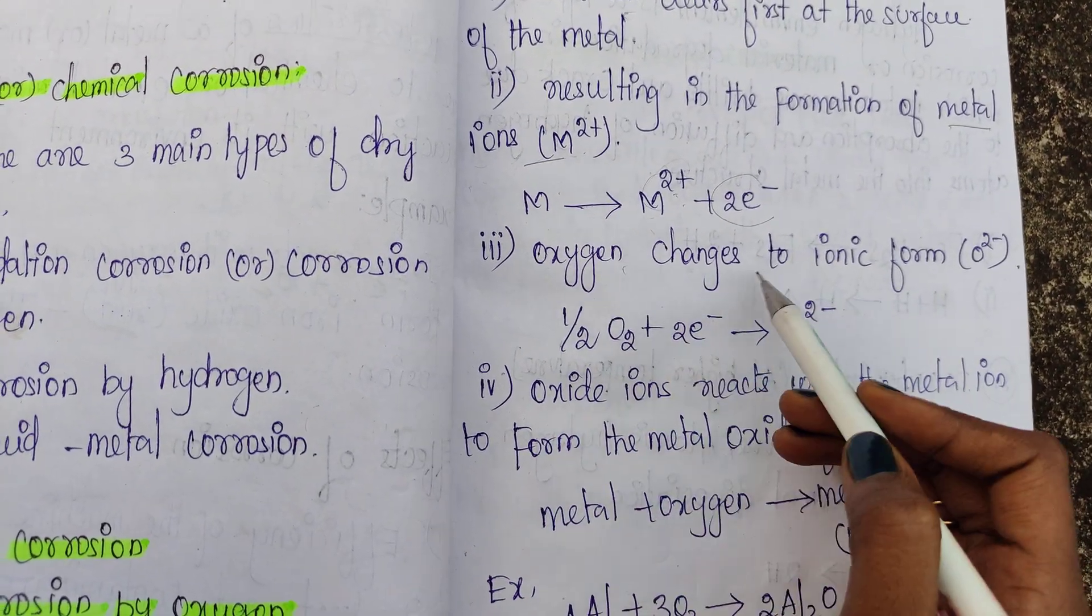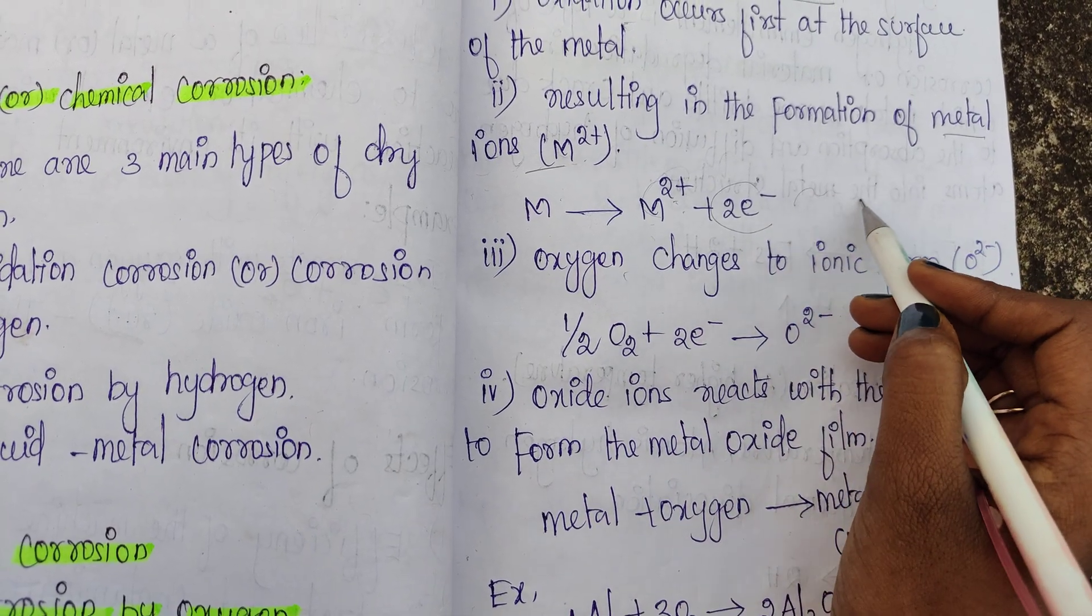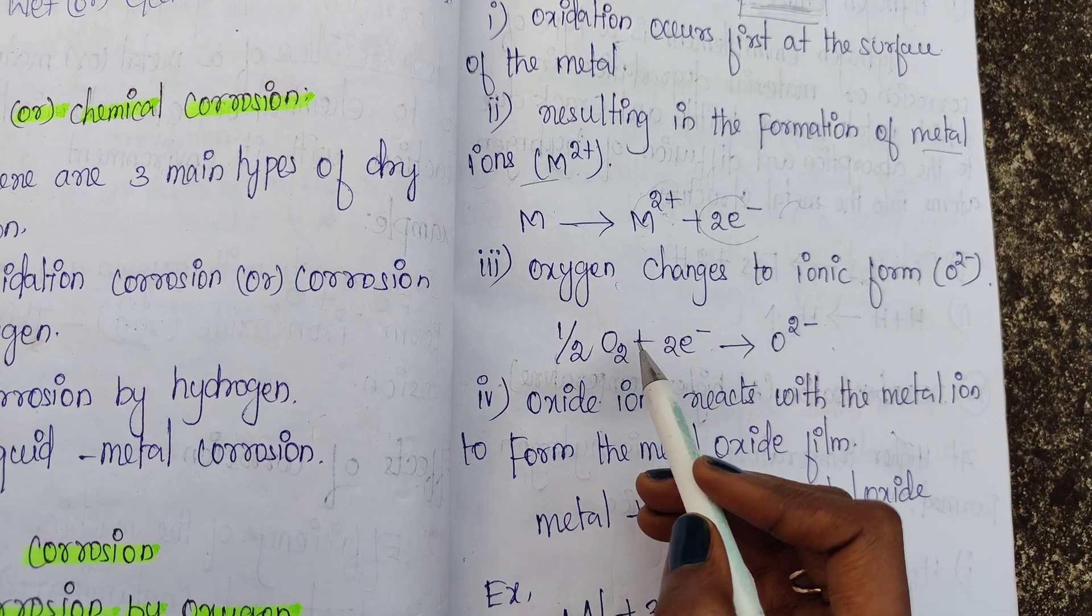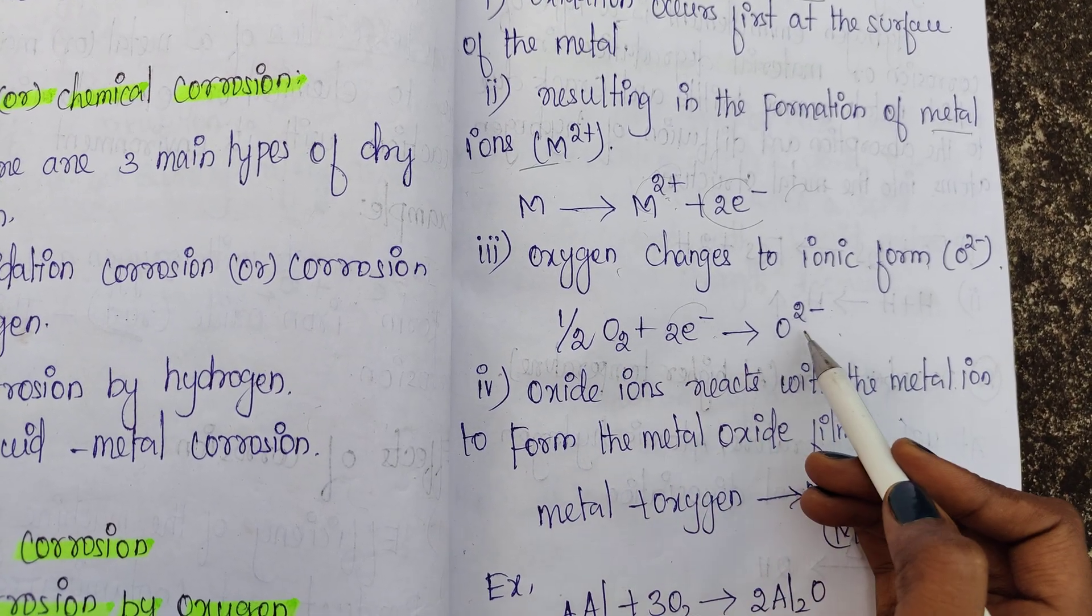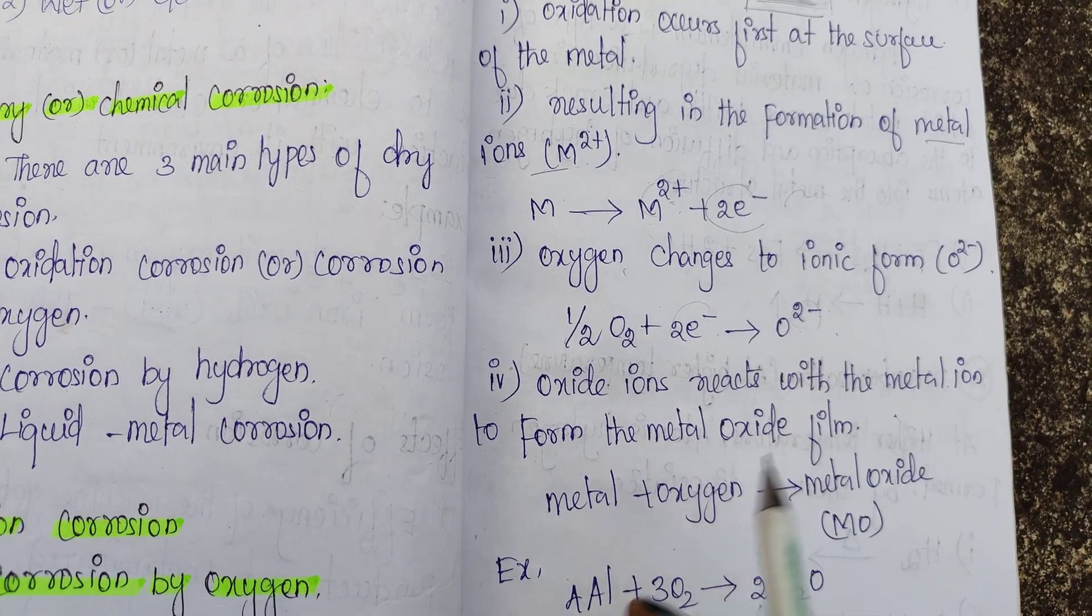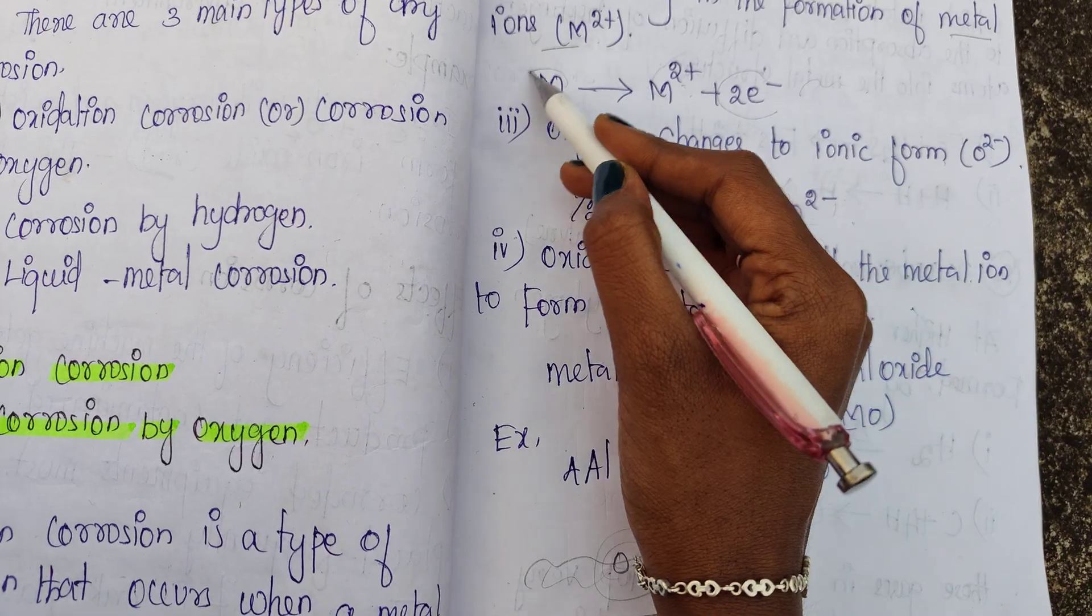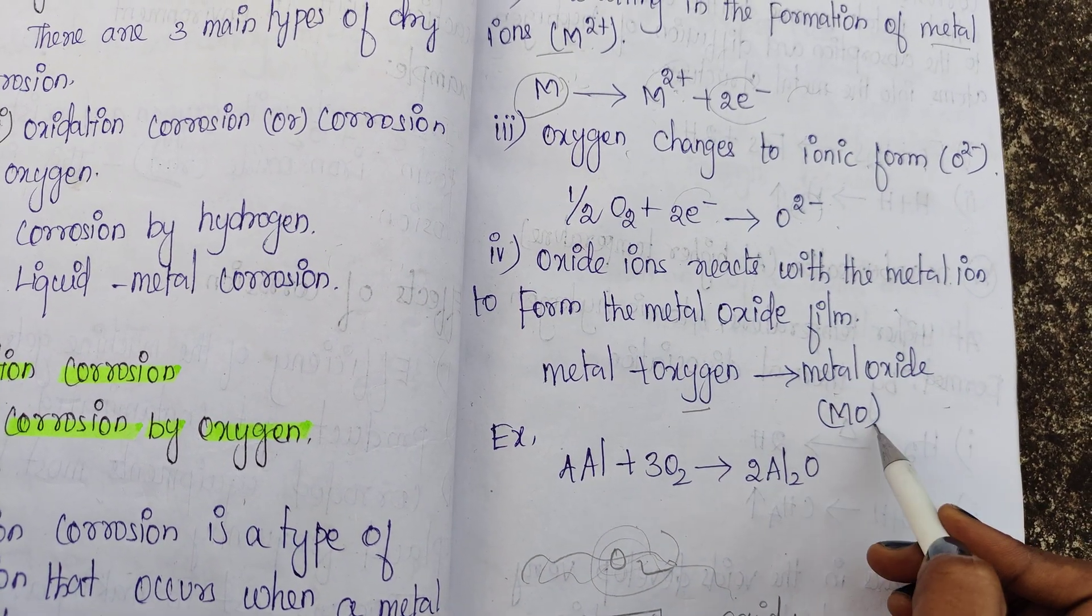In the environment, the oxygen is ionized. The oxygen becomes O²⁻ ion. The metal ion will react with the oxygen ion to form metal oxide.